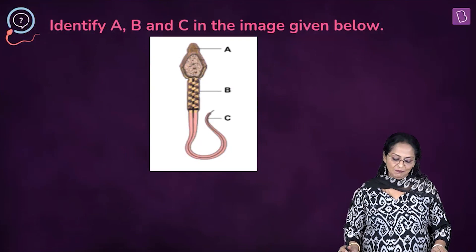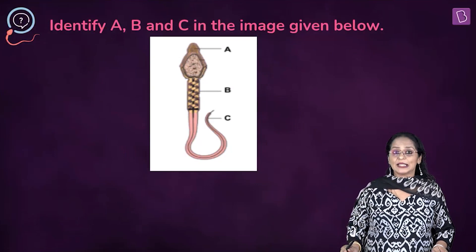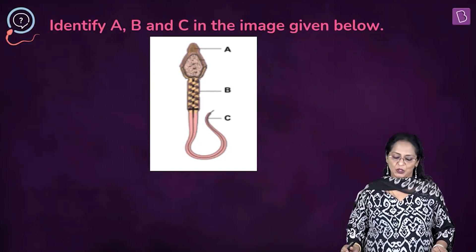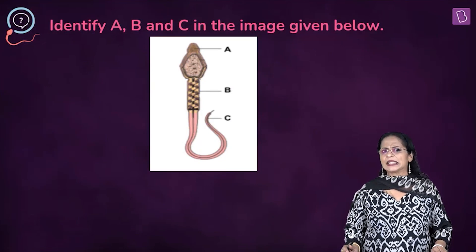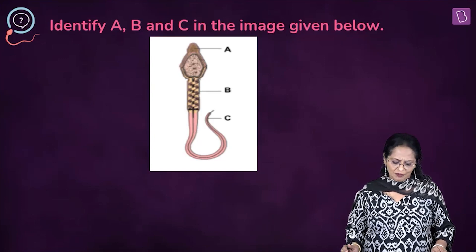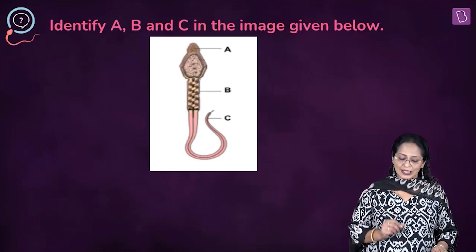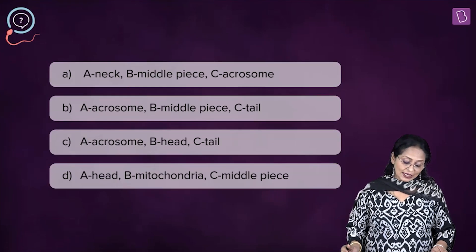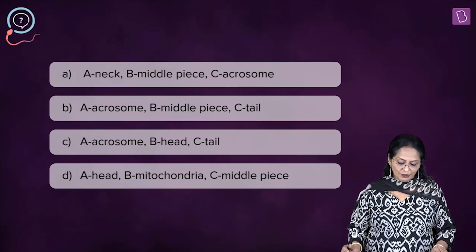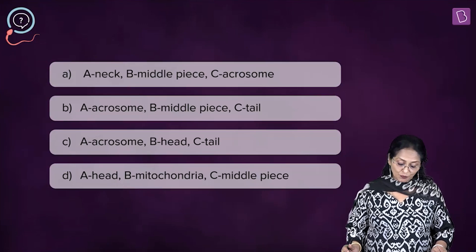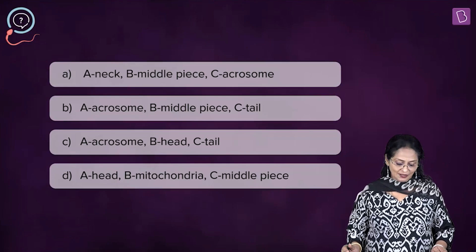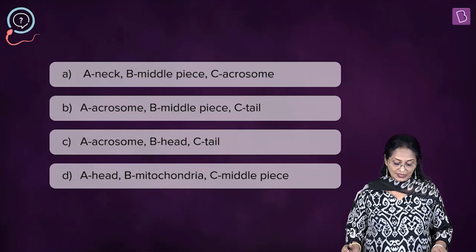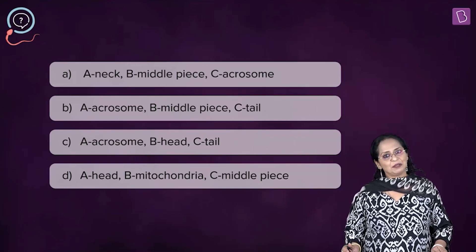This is a diagram question. You need to identify A, B, and C in the image of a human sperm. The options are: A) A is neck, B is middle piece, C is acrosome; B) A is acrosome, B is middle piece, C is tail; C) A is acrosome, B is head, C is tail; D) A is head, B is mitochondria, C is middle piece.